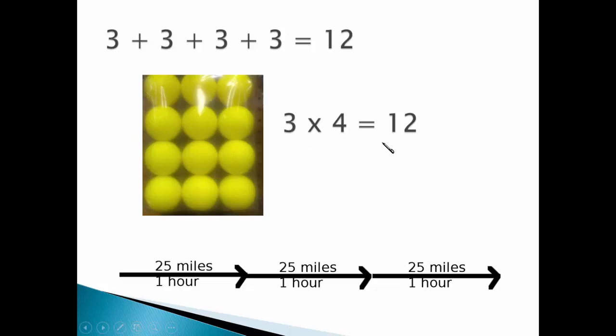Multiplying is a shortcut. Instead of adding three plus three plus three plus three, we remember that three times four is twelve. We calculate 25 times three to figure out 75 miles. It's a lot faster than counting.